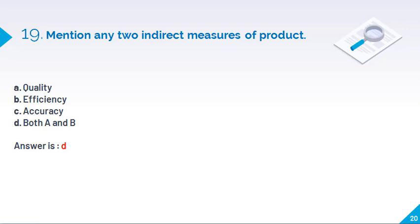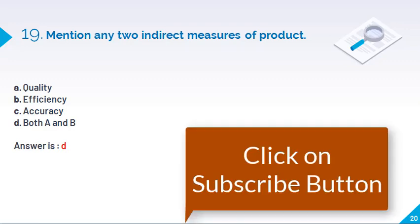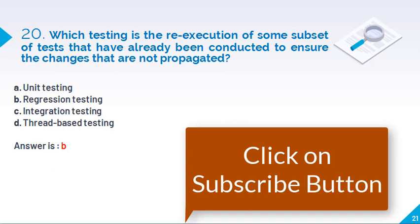Mention any two indirect measures of the product. So quality, efficiency and accuracy. So both A and B, both are the measures of the product because we have to maintain the quality as well as the efficiency of the particular software or the web application.